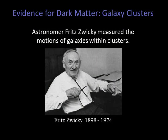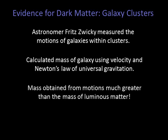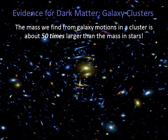There is observational evidence for dark matter on even larger scales. In the 1930s, astronomer Fritz Zwicky argued that galaxy clusters had enormous amounts of dark matter, but his idea wasn't taken seriously at the time. Zwicky measured the motions of galaxies within the clusters and, using Newton's law of universal gravitation, used the velocities of the galaxies to estimate the cluster's total mass. The total mass you expect is the mass from all the stars in the galaxies — estimated from their luminosities. What Zwicky found was that the mass obtained using the motions of stars was much larger than the mass of the luminous matter. The mass we find from galaxy motions in a cluster is about 50 times larger than the mass in stars.